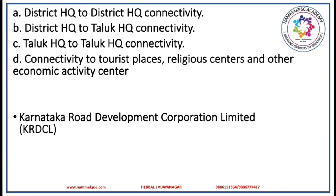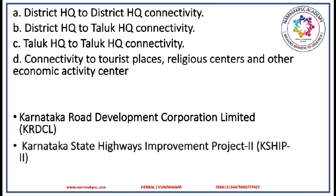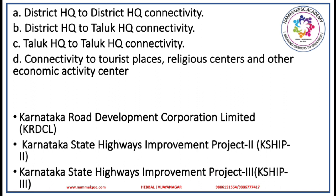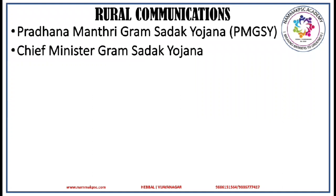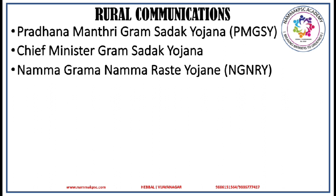At present, this corporation is taking up the development works of road infrastructure in Karnataka. KRDCL is also implementing the Karnataka State Highways Improvement Project 2 and 3. To improve rural communications, the Government of India is implementing the Pradhan Mantri Gram Sadak Yojana, about which we have already discussed in one of our previous videos. In the similar lines of Pradhan Mantri Gram Sadak Yojana, in the state of Karnataka, we have the Chief Minister Gram Sadak Yojana or the Mukhyamantri Gram Sadak Yojana. Karnataka State Rural Development and Panchayati Raj Department is implementing the Namma Grama Namma Raste Yojana, which involves laying of rural roads.